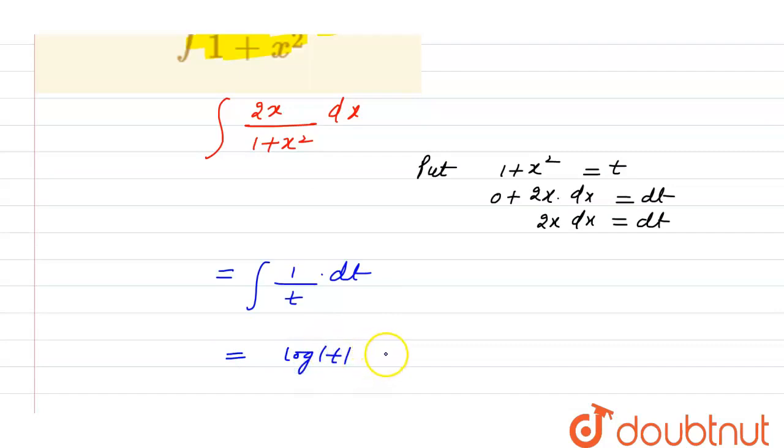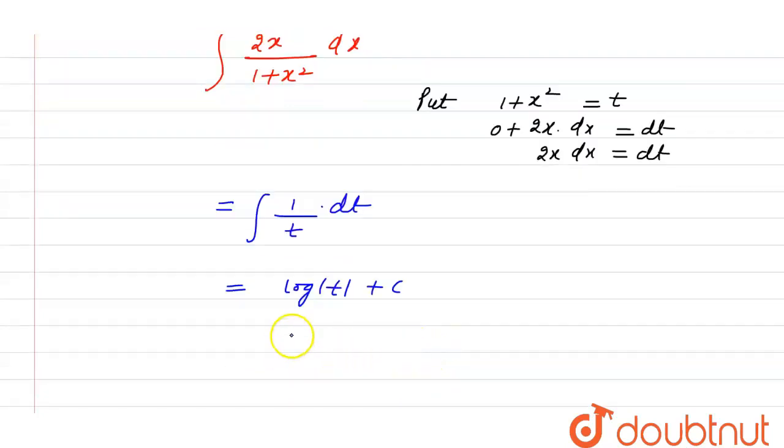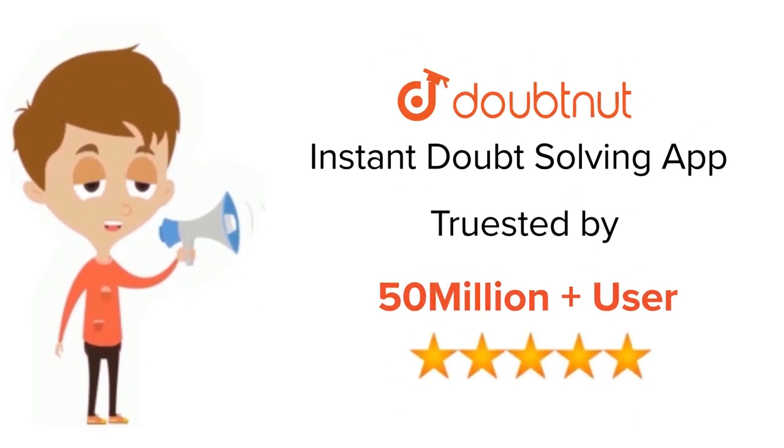So the integration is log|denominator| + C. Now we need to replace this. Our question was in the form of x, so we have to convert t back in terms of x. Since t = 1 + x², the final answer is log|1 + x²| + C.